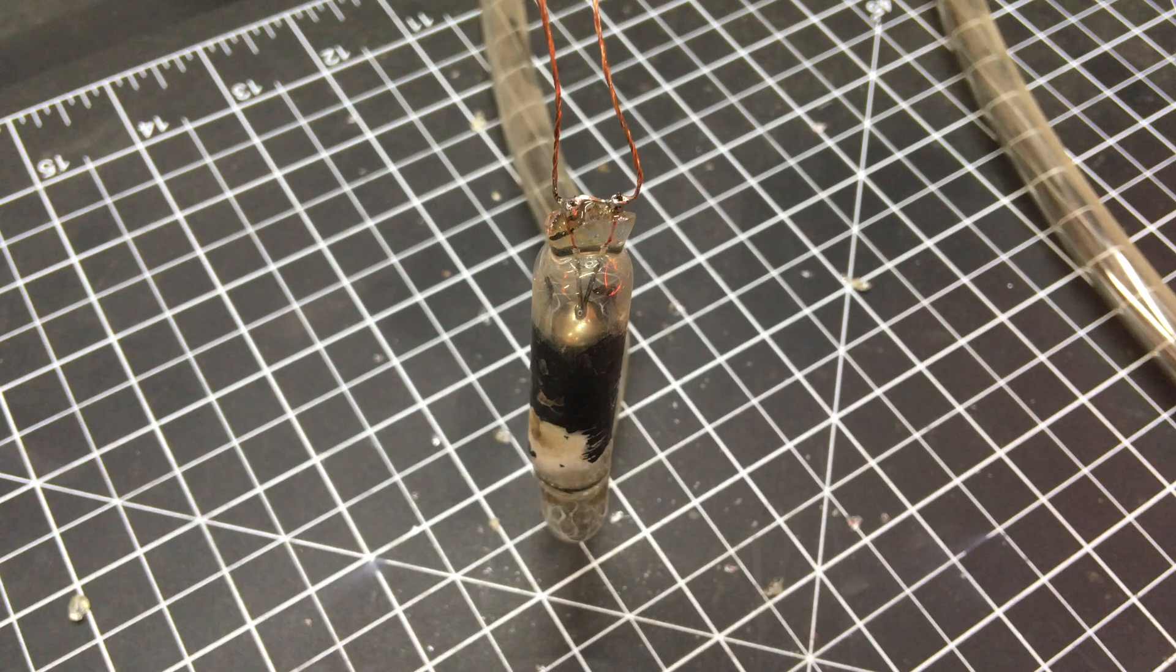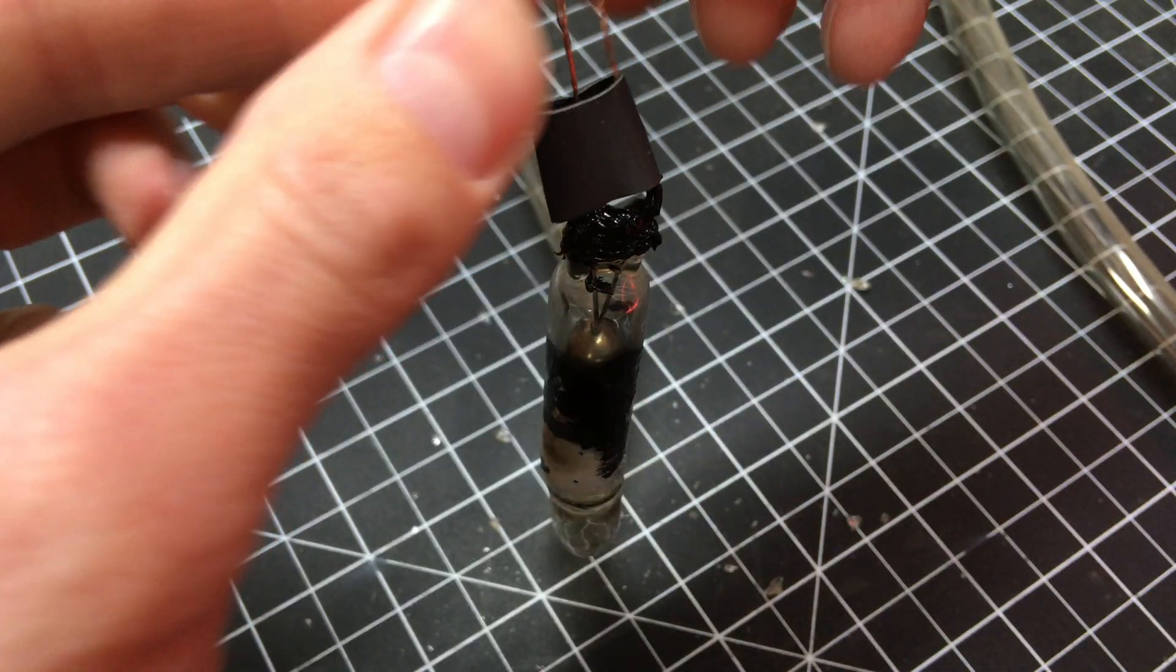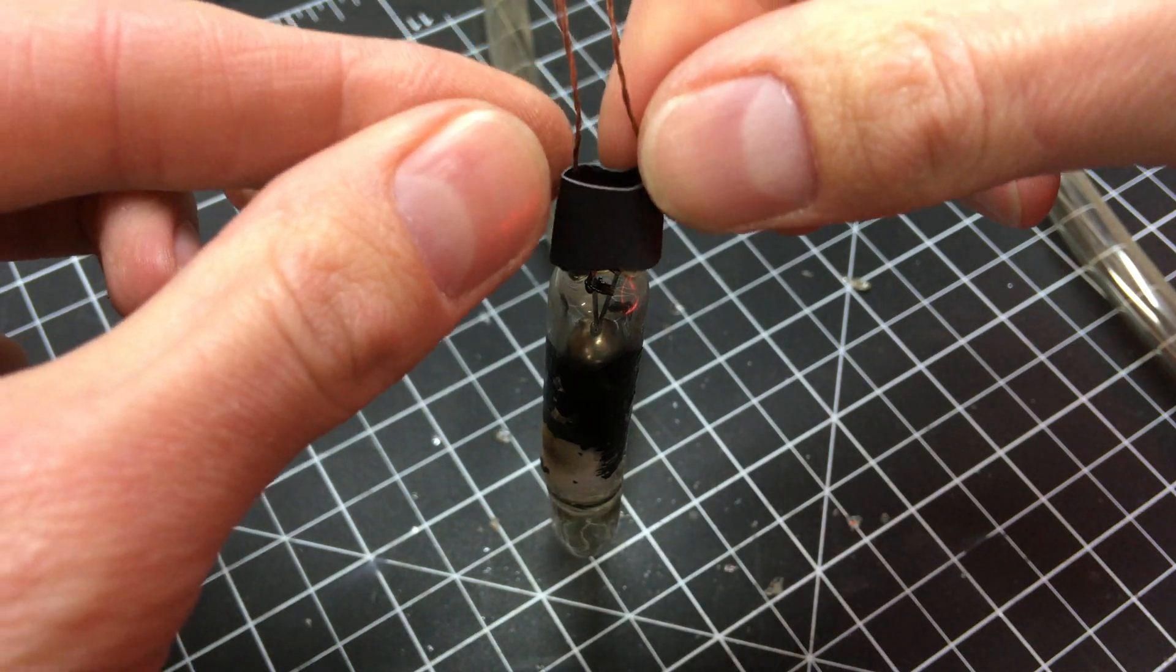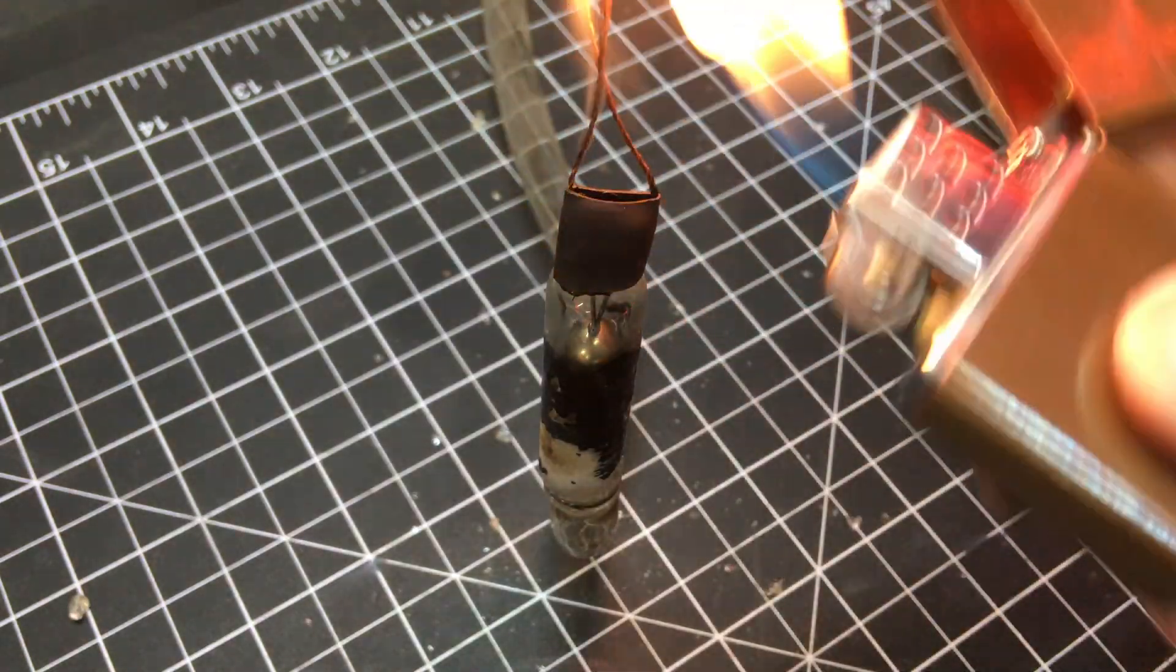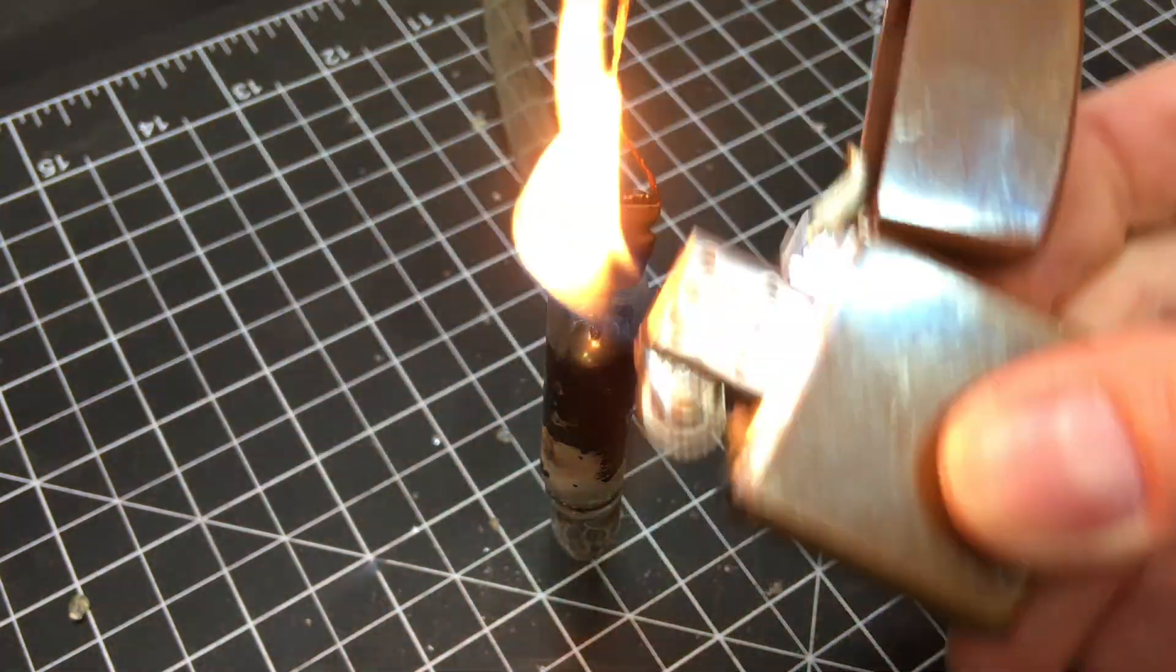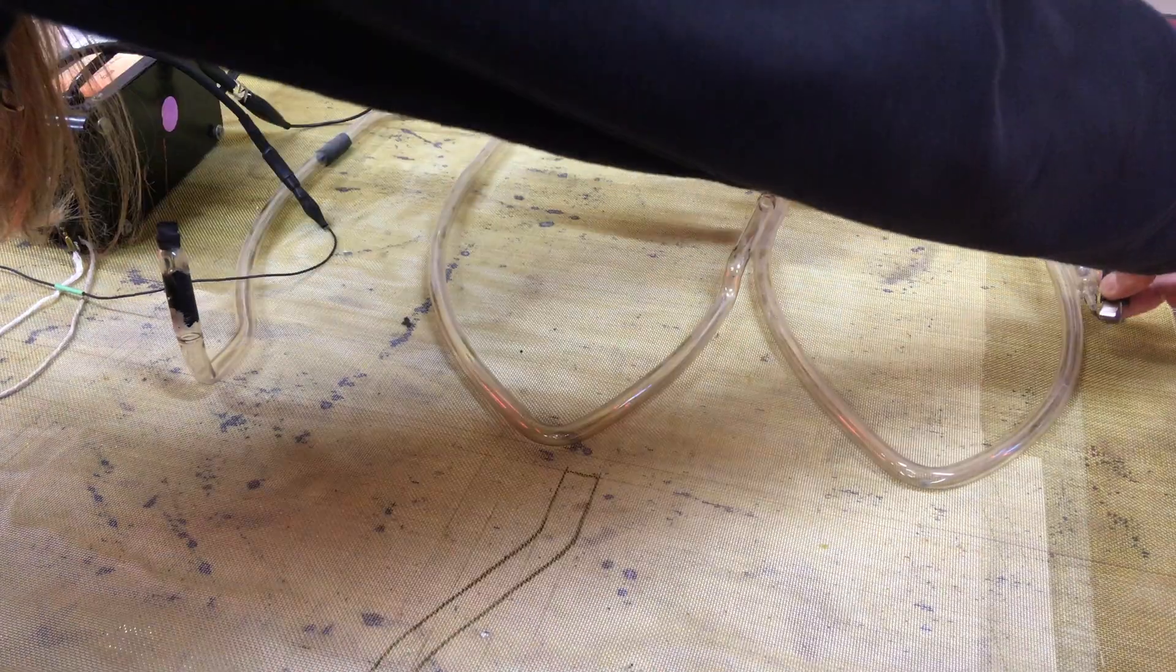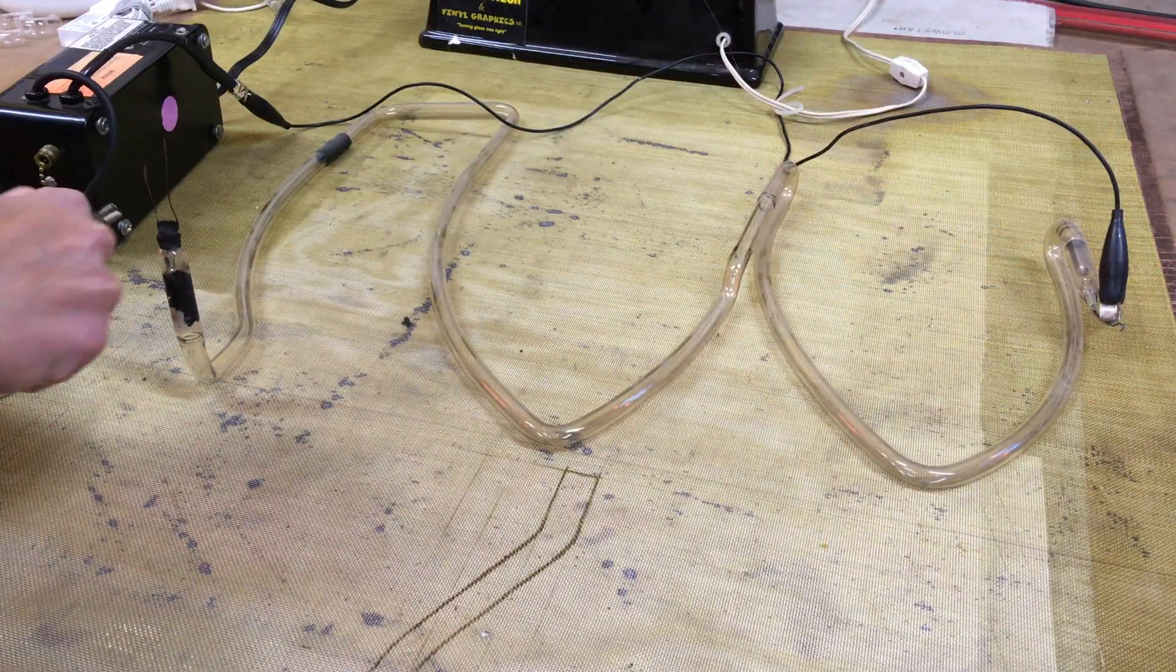At this point, the repair is complete. After cleaning up the flux, silicone and heat shrink tubing can also be applied to the repair to provide additional protection and strain relief. Once again, be aware that excessive heat near the electrode pinch seal can cause thermal stress fracturing. A final test on a transformer proves our repair was successful.